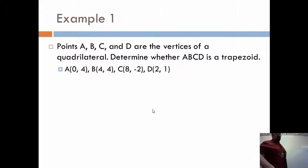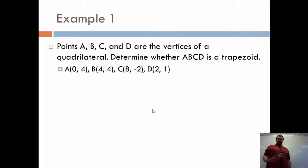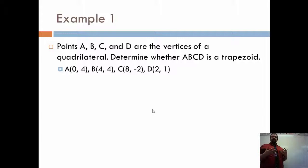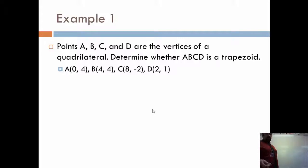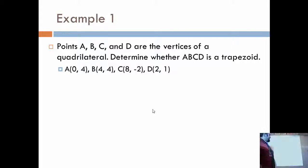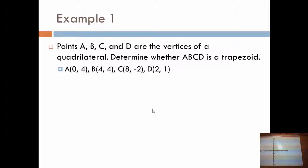Let's first just be able to identify if it's a trapezoid or not. What matters for it to be a trapezoid is simply that I have one set of parallel sides and one set that isn't. If I had two sets of parallel sides, it's not a trapezoid — it's a parallelogram. In this problem, it says determine whether it's a trapezoid, and it gives me four coordinate points. So we're going to have to plot them.